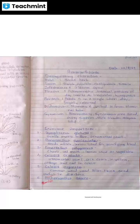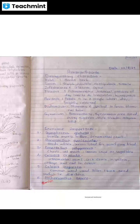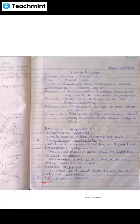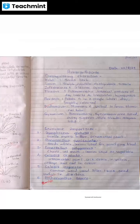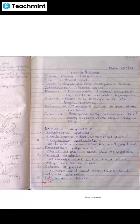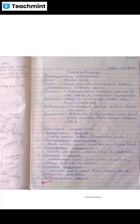Distinguishing characters: Habit — small herb. Leaves simple, opposite, exstipulate, sessile. Sessile means having no stalk — the leaves grow directly from the stem. Inflorescence globose. Flower actinomorphic, bisexual, with dry bracts and bracteoles, hypogynous.